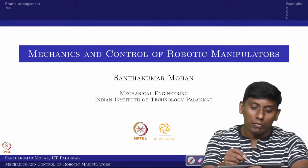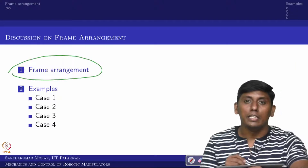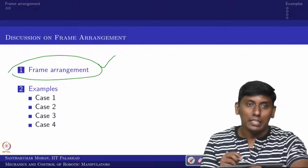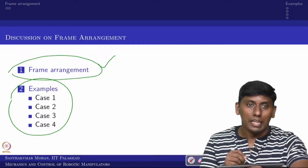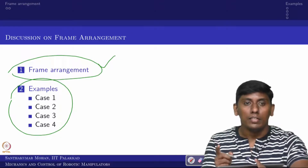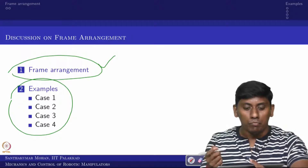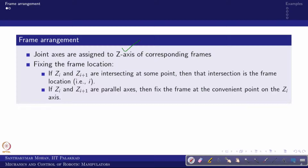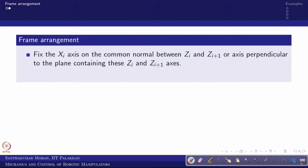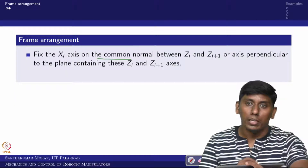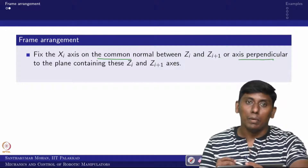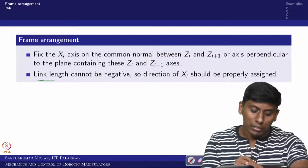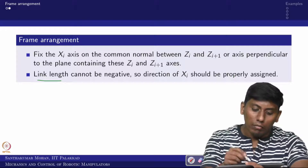Let's recall what we covered in the last lecture on frame arrangement. The z-axis is always associated with the joint. If axes are intersecting, the intersection point is the i-th frame; if parallel, you can choose conveniently. The x-axis takes the common normal, or if none exists, the axis perpendicular to the plane containing the z-axes. Remember, link length cannot be negative.